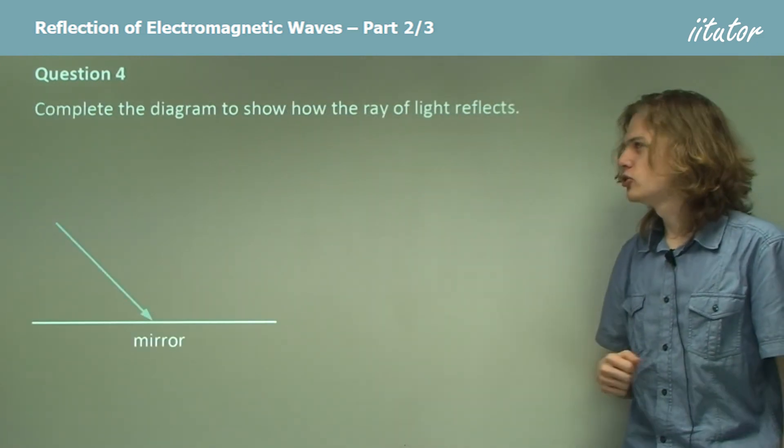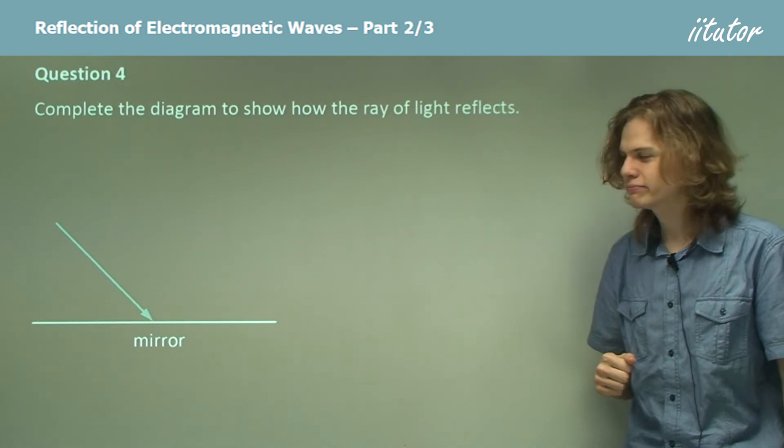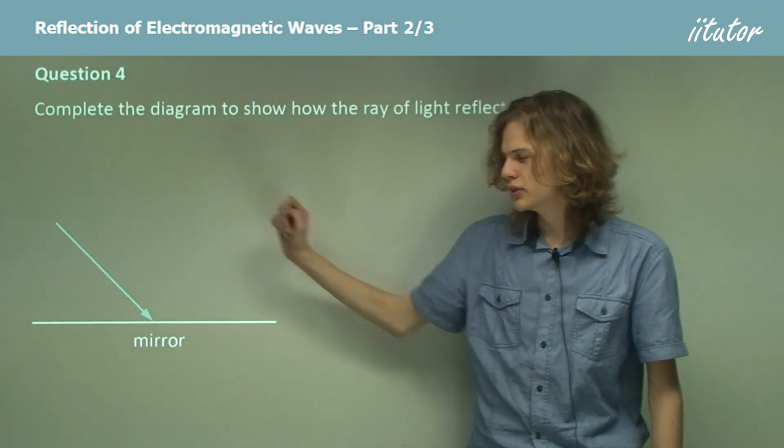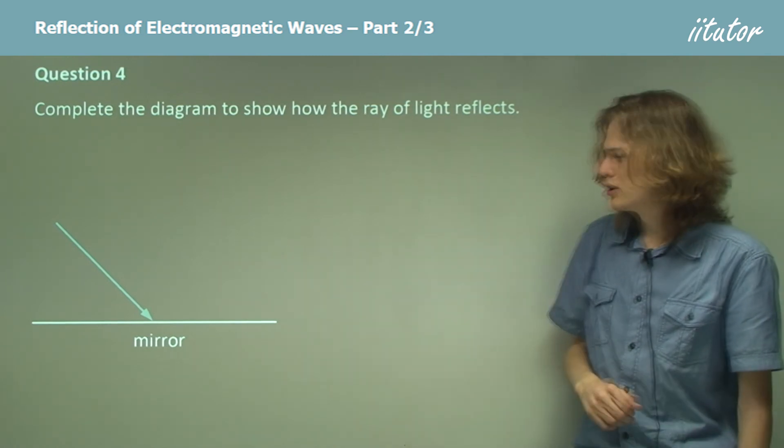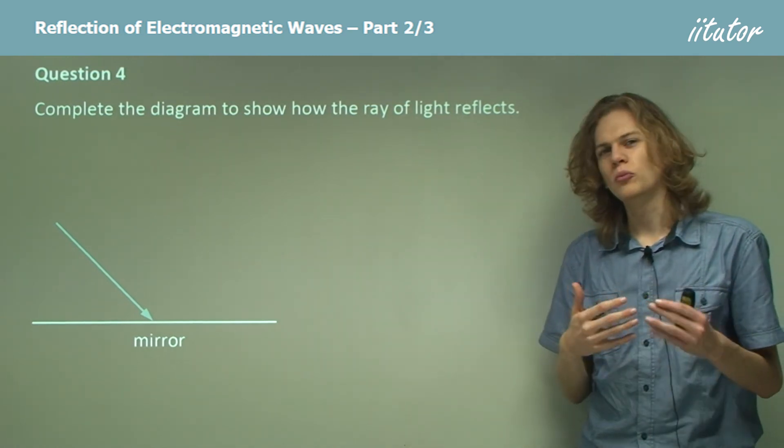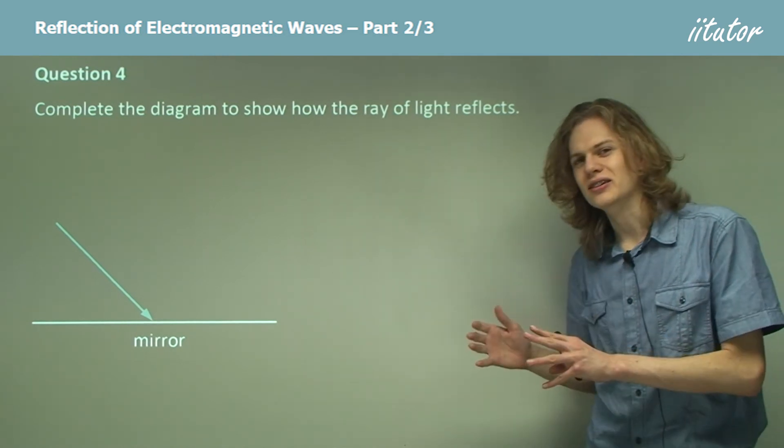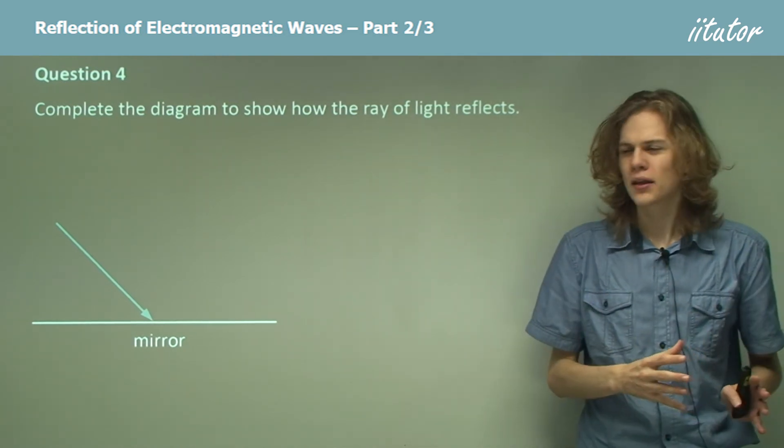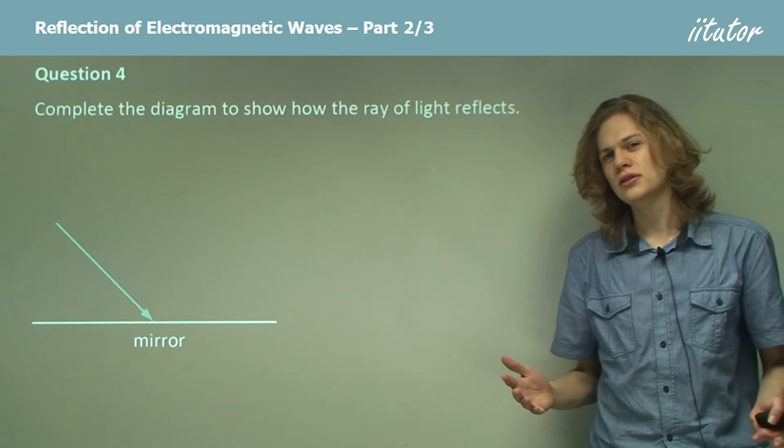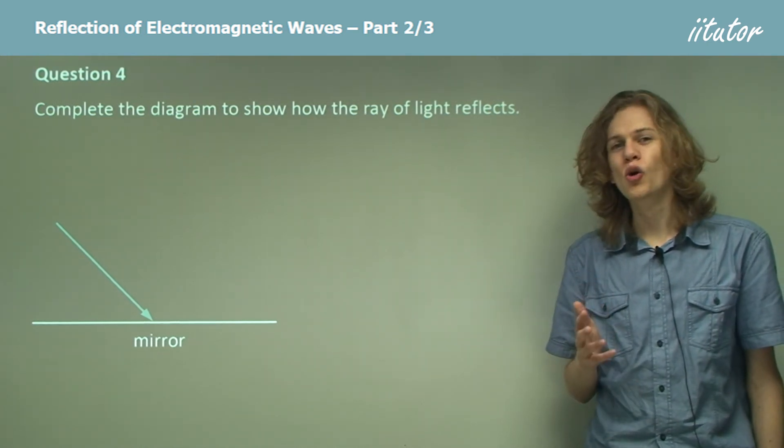Complete the diagram to show how the ray of light reflects. We have an incoming ray in blue. We have a mirror. So how do we figure out how the light reflects? Well, we know that the angle of incidence will equal the angle of reflection. But how can we see what the angle of incidence is? Well, the best way to do it would be to draw a normal.